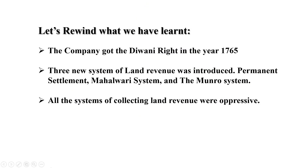Let's rewind what we have learned. The company got the Diwani right in the year 1765. Three new systems of land revenue were introduced: the Permanent Settlement, the Mahalwari system, and the Munro system. All the systems of collecting land revenue were oppressive.